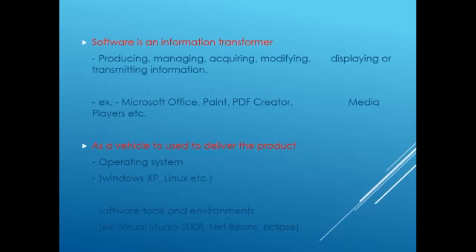Software is an information transformer — that means it is involved in producing, managing, acquiring, modifying, displaying, or transmitting information. Examples include Microsoft Office, Paint, PDF Creator, and Media Players. As a vehicle to deliver a product, examples include operating systems like Windows XP and Linux, as well as software tools and environments such as Visual Studio 2008, NetBeans, and Eclipse.